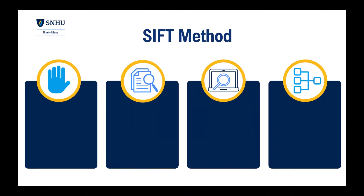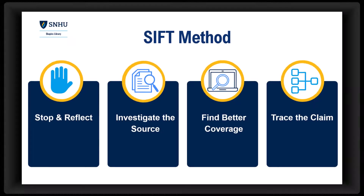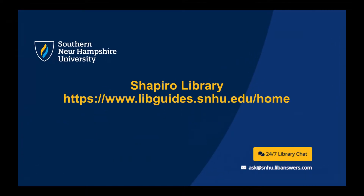In summary, use the SIFT method to check that the information you find is credible. By stopping and reflecting, investigating the source, finding better coverage, and tracing the claims, you'll be better equipped to determine which information you can trust before sharing or using it. If you have any questions about SIFT, please feel free to reach out to our friendly librarians by using the 24/7 library chat button on the homepage of the library website or emailing ask@snhu.liveanswers.com. Thank you for watching this video and good luck with your research!